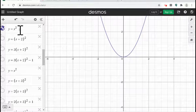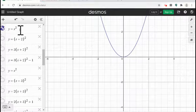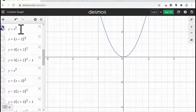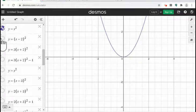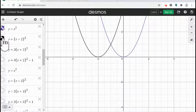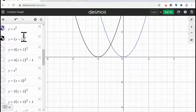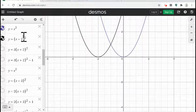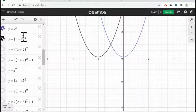As usual we are starting with original function which is y equals x square. So first step is I'm adding 2, so x plus 2 to the square. So it is resulting horizontal shift to the left by 2 units.